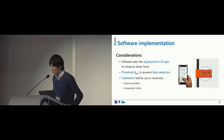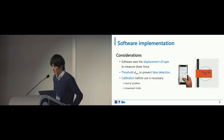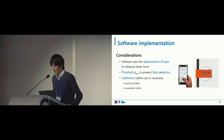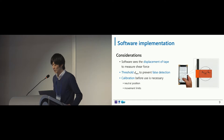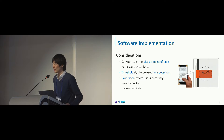Regarding the software implementation, there are a couple of common considerations for applying Shear Seat. First, to measure shear force, it is necessary for the software to see the displacement of the touch with the conductive tape from the neutral position. In addition, a certain threshold should be set constantly in order to prevent false detection of shear force input when the seat moves a little unintentionally. Finally, since the neutral position and movement limit might change, it is necessary to calibrate them before use.